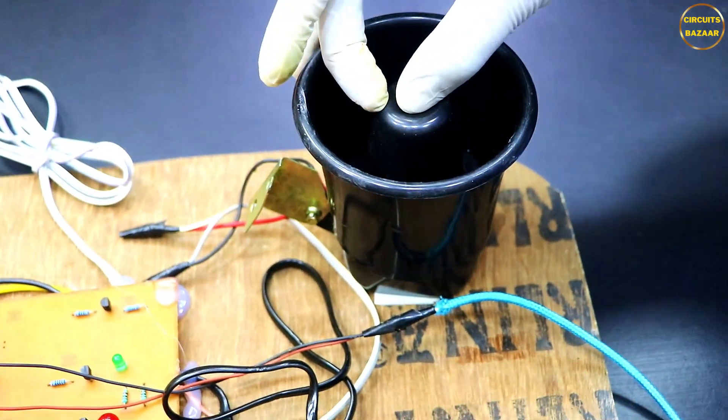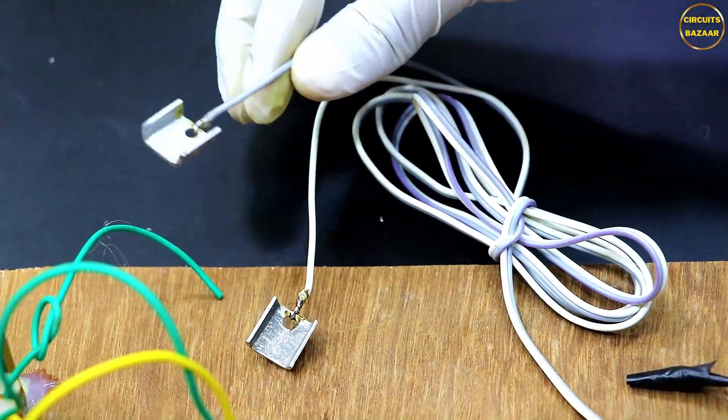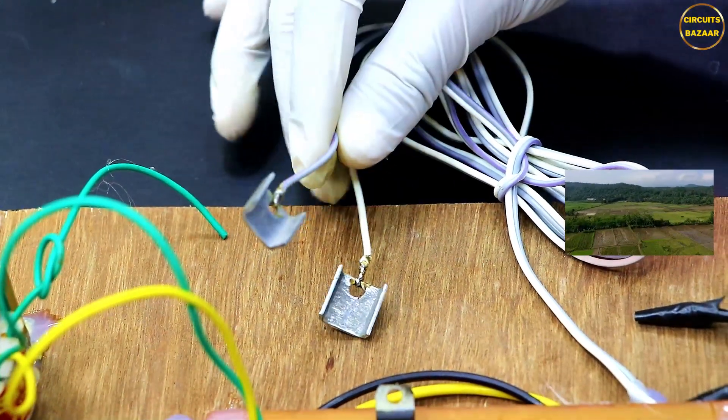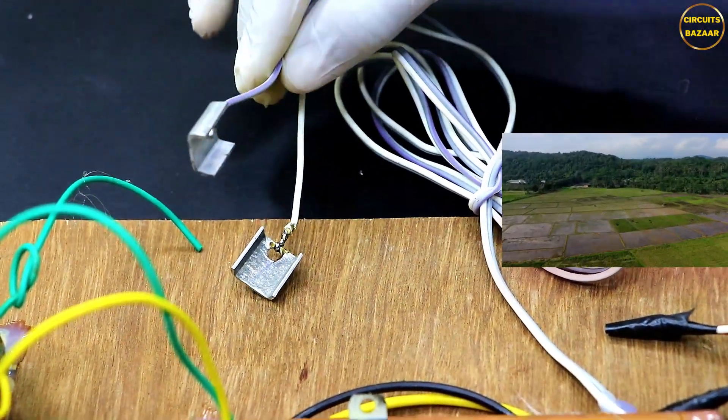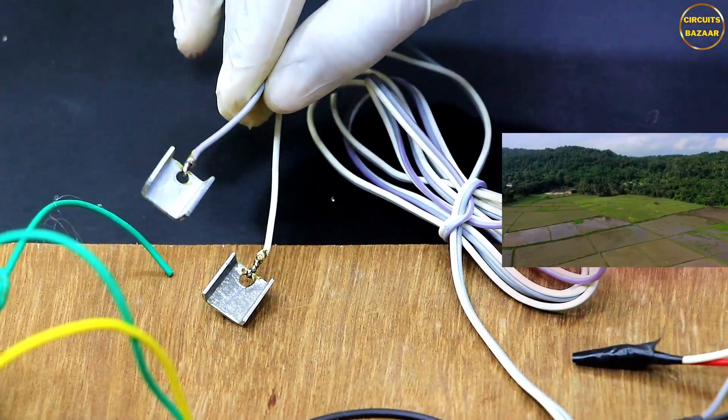These are the level sensors. These level sensors will detect the water level, so whenever the water level will be reached to the desired level then the water pump would be off.